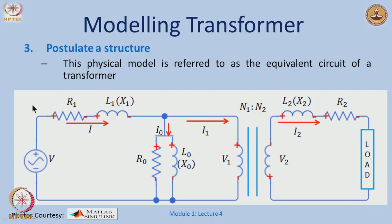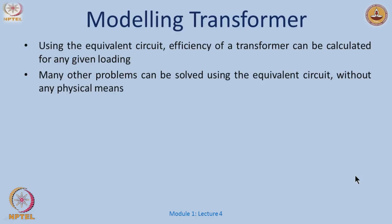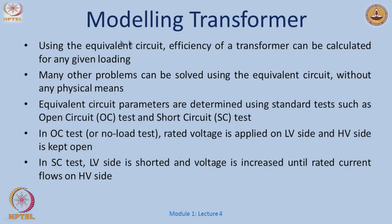We give a structure to that: the primary and secondary windings each have resistance R1 and R2, flux leakages modeled as inductances L1 and L2, core heat losses as R0, and core inductance L0. The resulting equivalent circuit has a voltage source, resistance, inductance L1, R0, L0, the turns ratio, L2, R2, and so on. This is the physical model of the transformer. Given a transformer, parameters R1, L1, R0, L0, L2, R2 need to be identified.